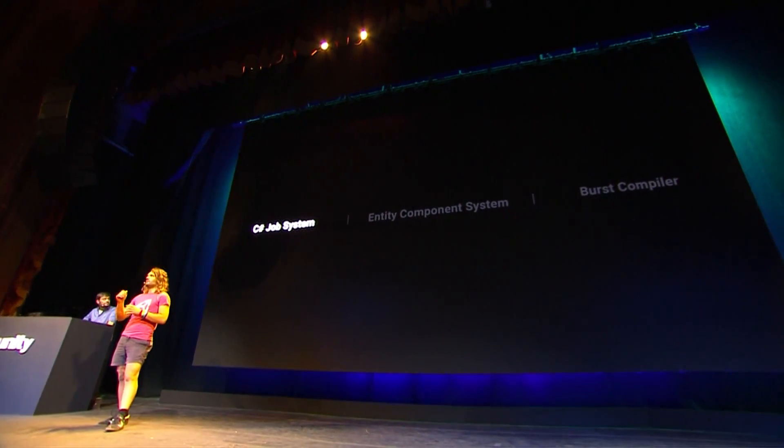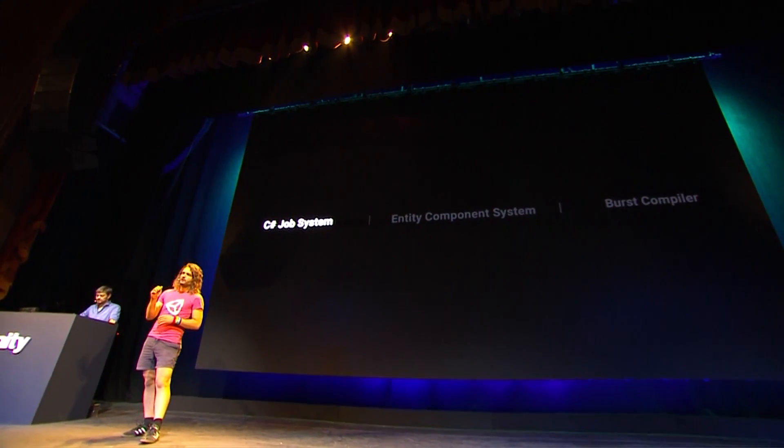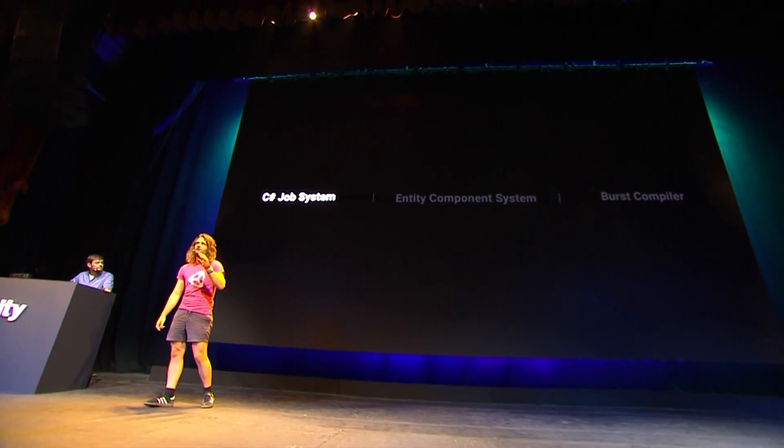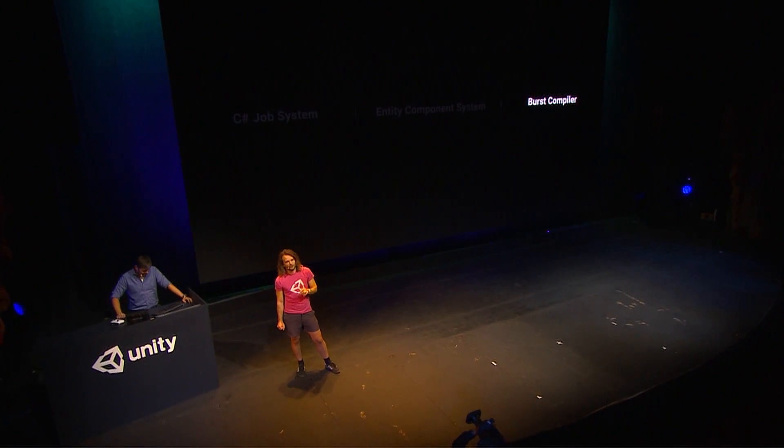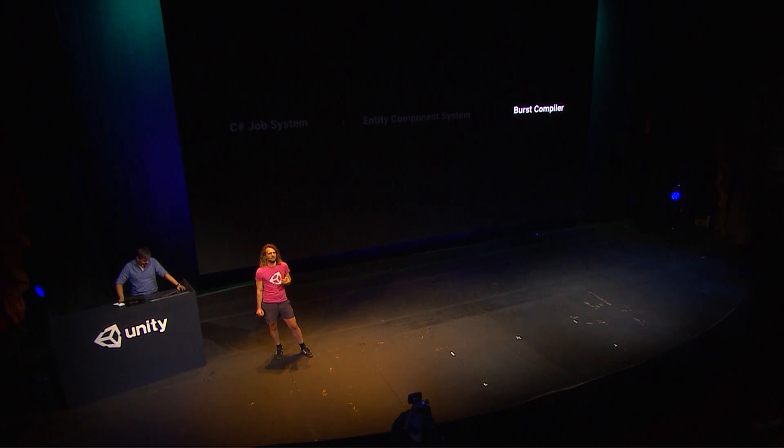We built this project on our in-preview data-oriented design technology and a bunch of optimizations that we're bringing into Unity 2019.1. We have the C# Job System — with that we can run all of this code on multiple cores easily and safely. We have the Entity Component System making it easy to lay out all your data for the best memory access performance. And the Burst Compiler gives incredible speed-ups by generating efficient machine code for the target platform specifically for C# jobs.